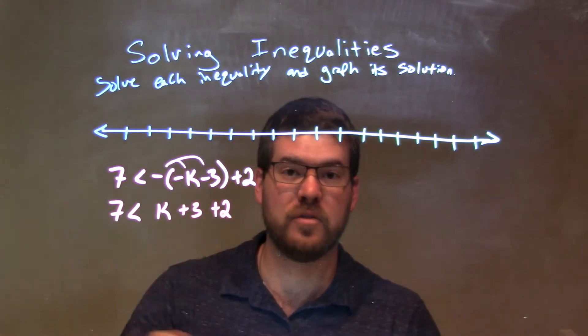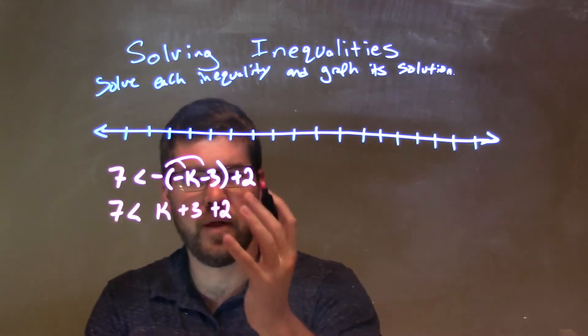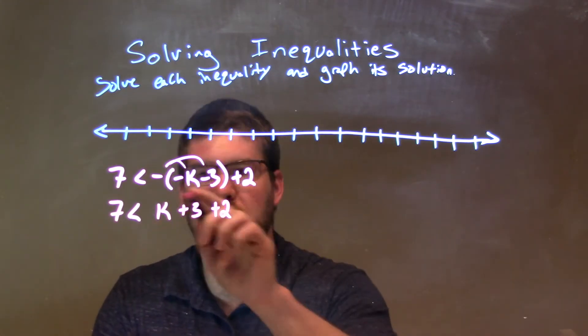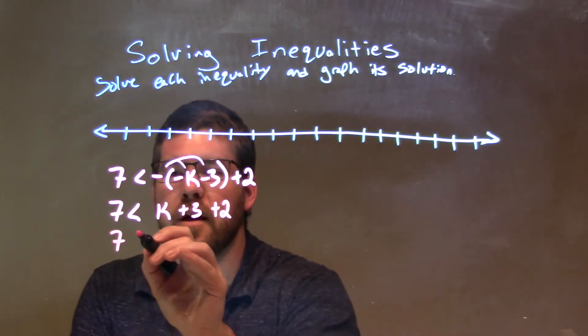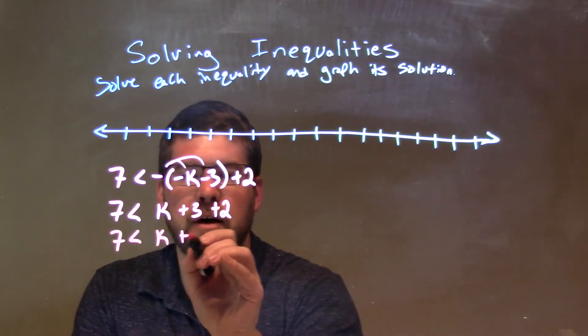From there, 3 plus 2 is just 5. We can't work with parentheses unless we distribute, so 7 is less than k plus 5.